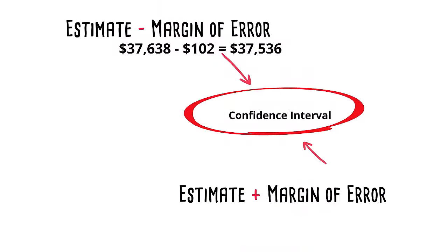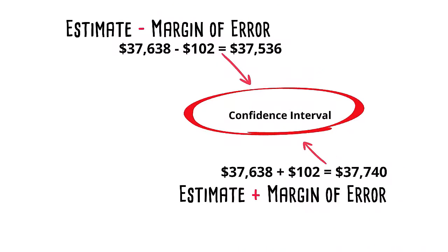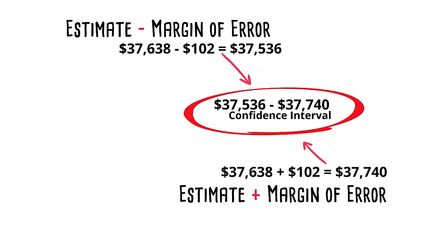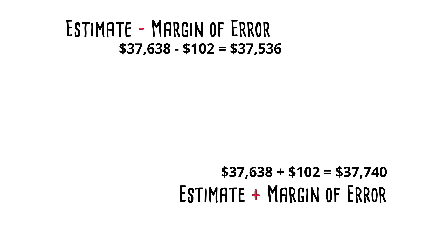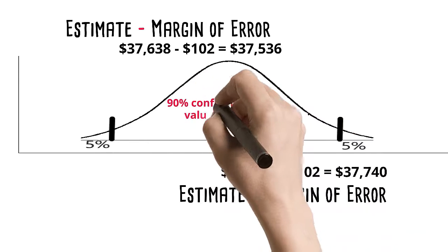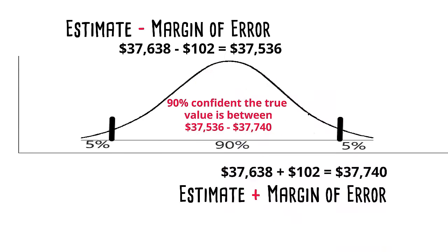By adding and subtracting the margin of error from the point estimate, we can calculate the 90% confidence interval for this estimate. Let's draw this on a normal curve and describe what we see. Based on the per capita income estimates and margin of error, we can be 90% confident that the true value of the per capita income for the entire population or universe is between $37,536 and $37,740.